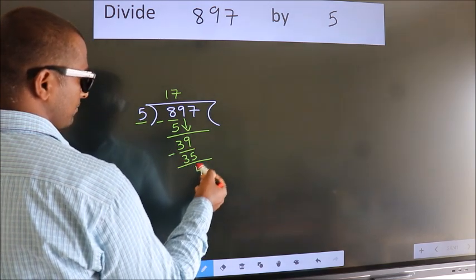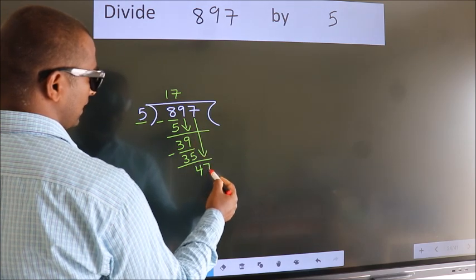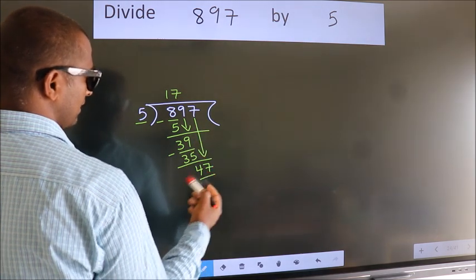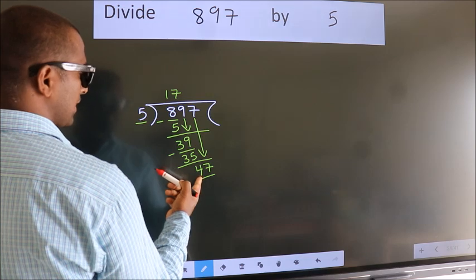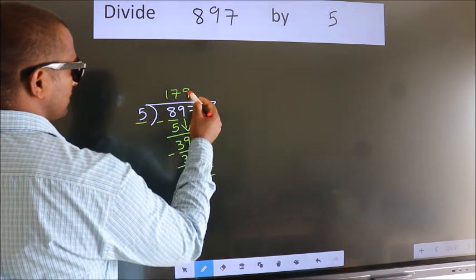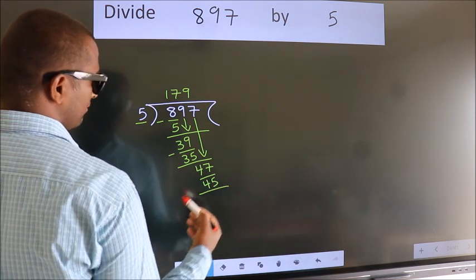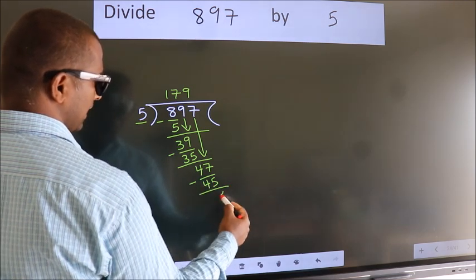After this, bring down the beside number. So 7 down, making 47. A number close to 47 in the 5 table is 5 nines, which is 45. Now we subtract. We get 2.